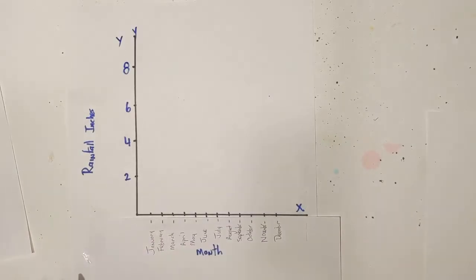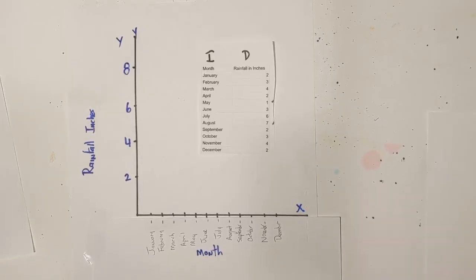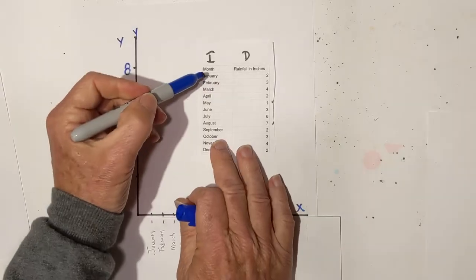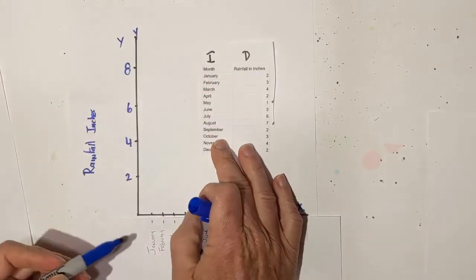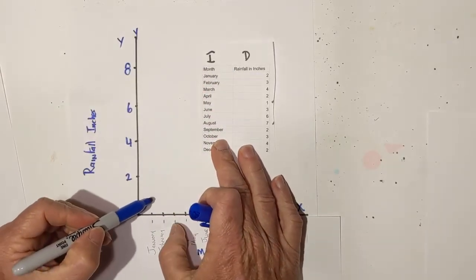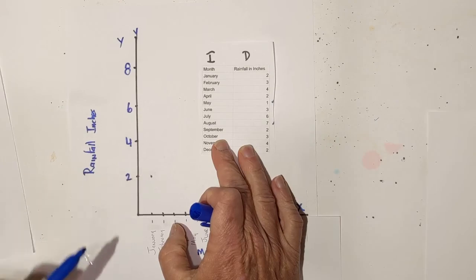Now what we do is we begin to plot our data. Let's start plotting. For January, you have two inches. So I go January and I go up to two, I put a dot.